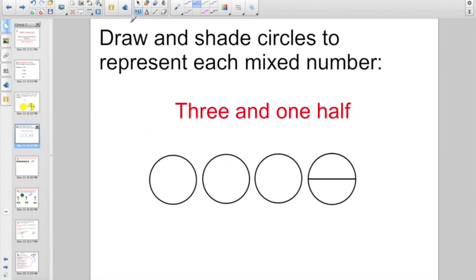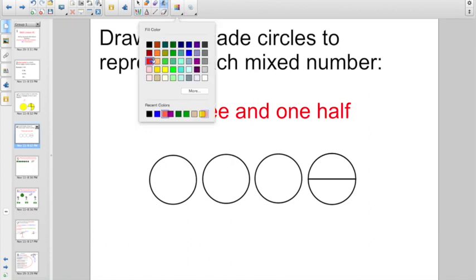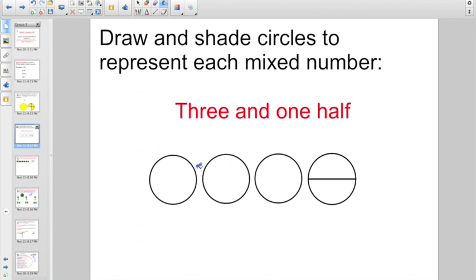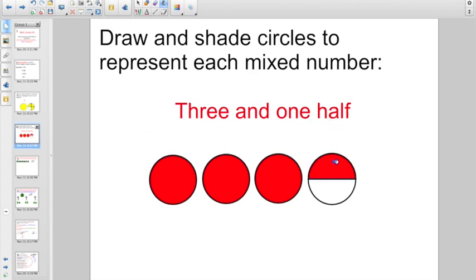They might ask you to draw and shade circles to represent each mixed number. And here they used words. They said three and a half. So start off drawing three whole circles and get them shaded, right? There's your three circles. And then draw the last circle and cut it into however many pieces they describe. In this case, they're saying a half. So just go ahead and shade it like that. Three and one half.